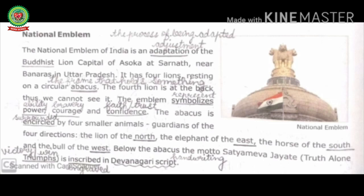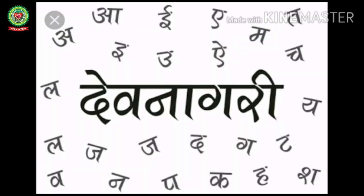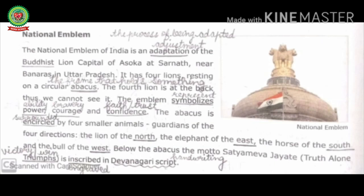The four animals are the lion of the north, the elephant of the east, the horse of the south, and the bull of the west. Below the abacus, the motto Satyamev Jayate — meaning truth alone triumphs — is inscribed in Devanagari script. Triumphs means victory or win; inscribed means engraved; script means handwriting. Dev means God, and Nagari is based on the old Brahmi script used in Hindi. I hope this topic is clear to all.